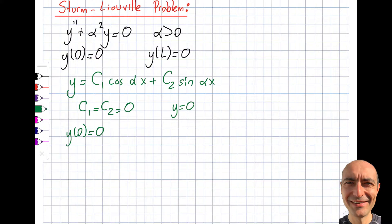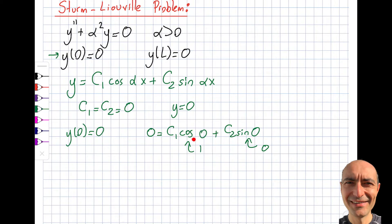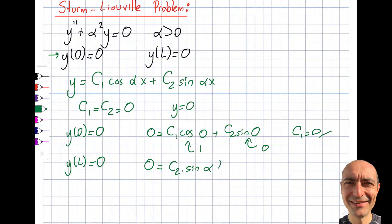Starting with the first boundary condition, inserting x = 0: 0 = C1 cos(0) + C2 sin(0). Since sin(0) = 0 and cos(0) = 1, we get C1 = 0, so that term drops out. Moving to the second boundary condition y(L), with C1 = 0 we have C2 sin(αL) = 0. We could still have C2 = 0 as a trivial solution, but that is not useful from a physics point of view.